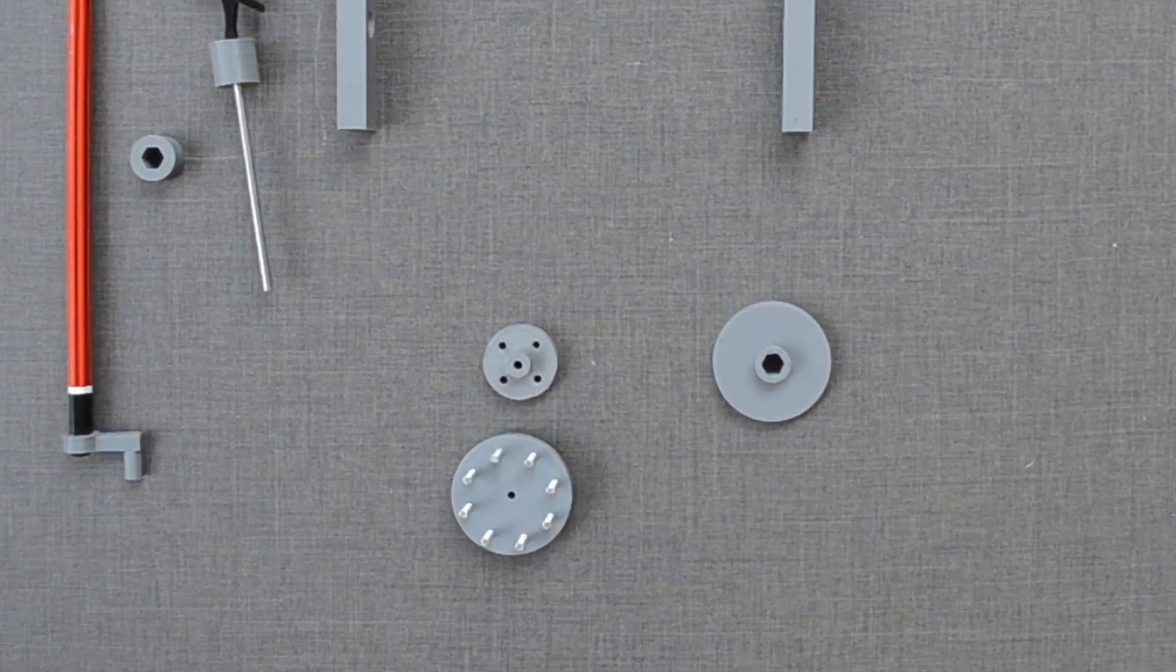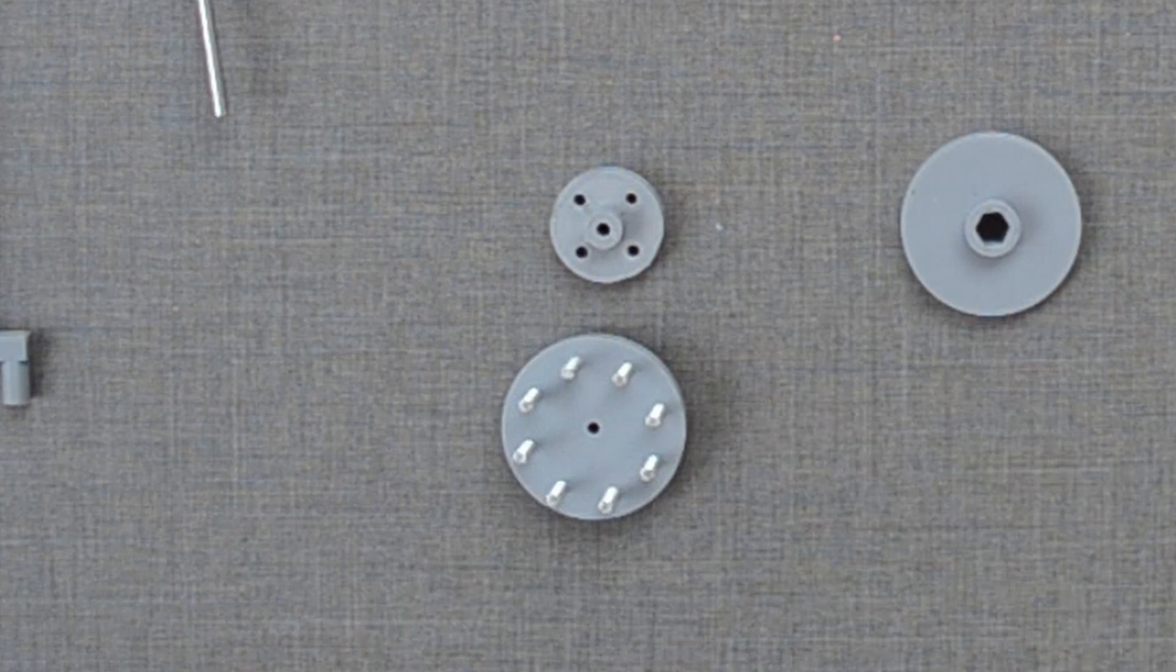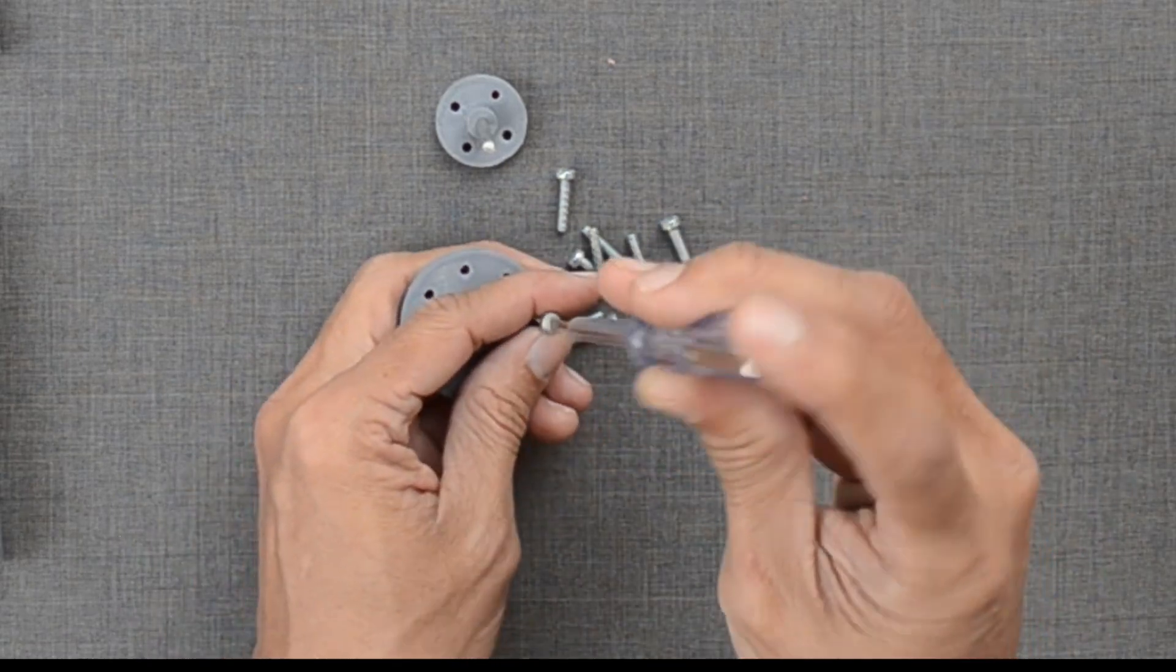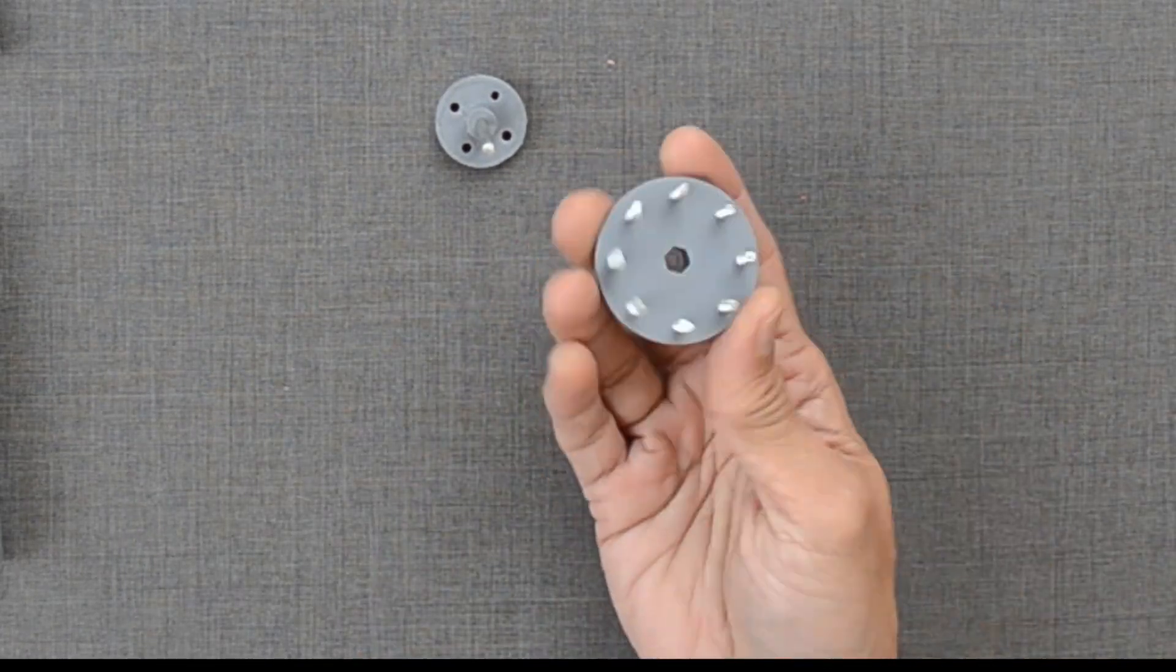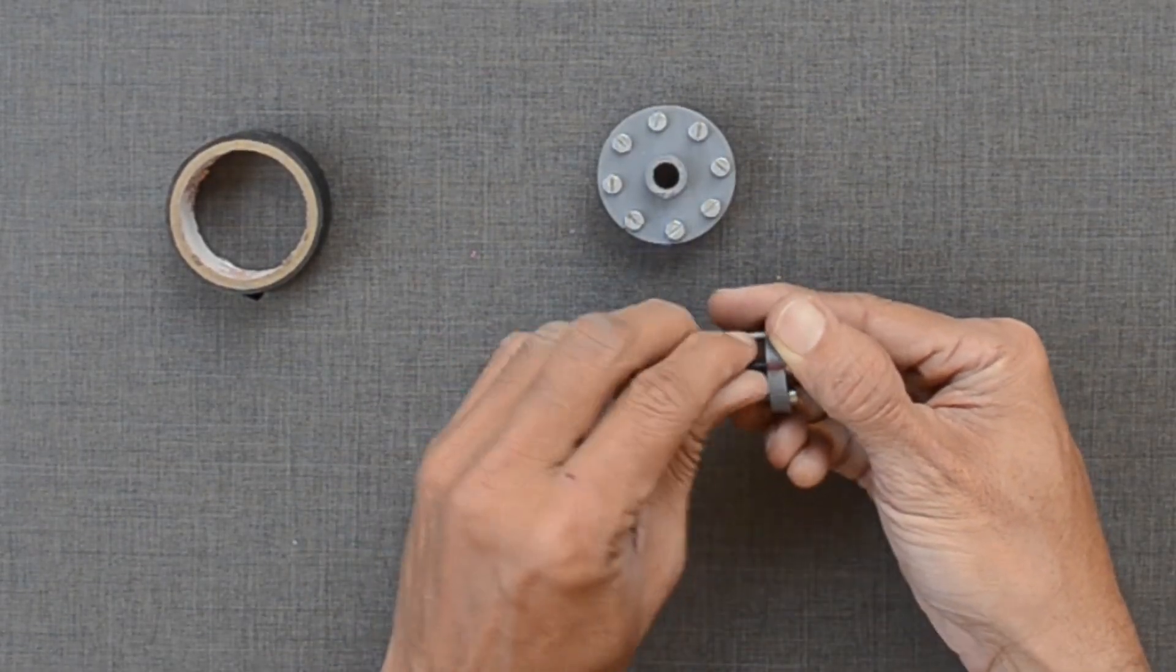This 3D printed wheel has holes at an equal distance from the center. They are also equidistant from each other. I will put a 3 mm bolt and build a pinwheel. Marking with black tape will help us in measurements.